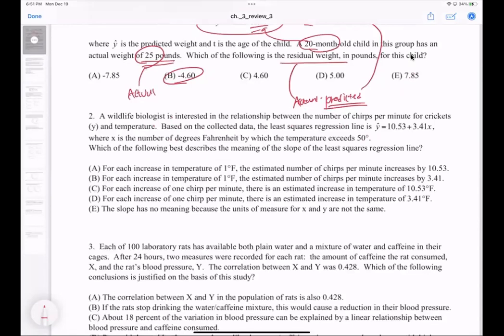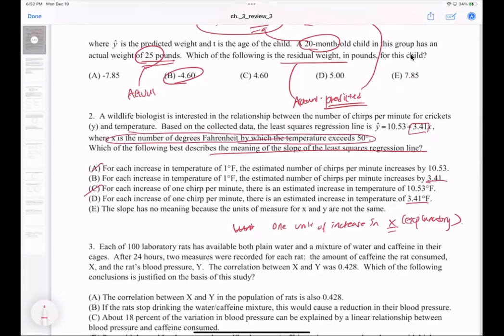Number two asks you to find the correct interpretation of the slope. The slope is 3.41, so I'm really going to concentrate on B or D. It's every one unit of increase in the explanatory variable. The explanatory variable is the x value, which is the number of Fahrenheit by which the temperature exceeds 50 degrees. It needs to increase by one degree Fahrenheit each time, so it should be B.